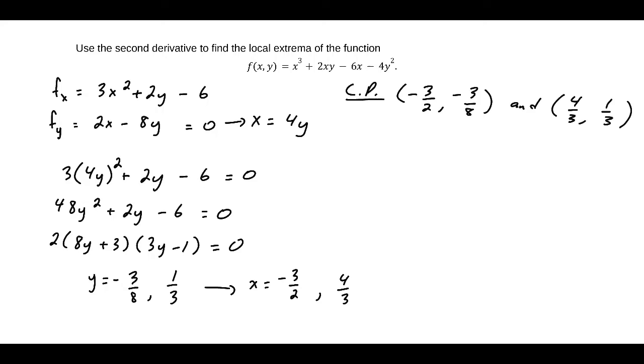Now in order to determine, using the second derivative, if these two points are maximums, minimums, or saddle points, we need to find the value of d. By definition, d is equal to fxx evaluated at that point multiplied by fyy evaluated at that point minus fxy evaluated at that point and then squared.